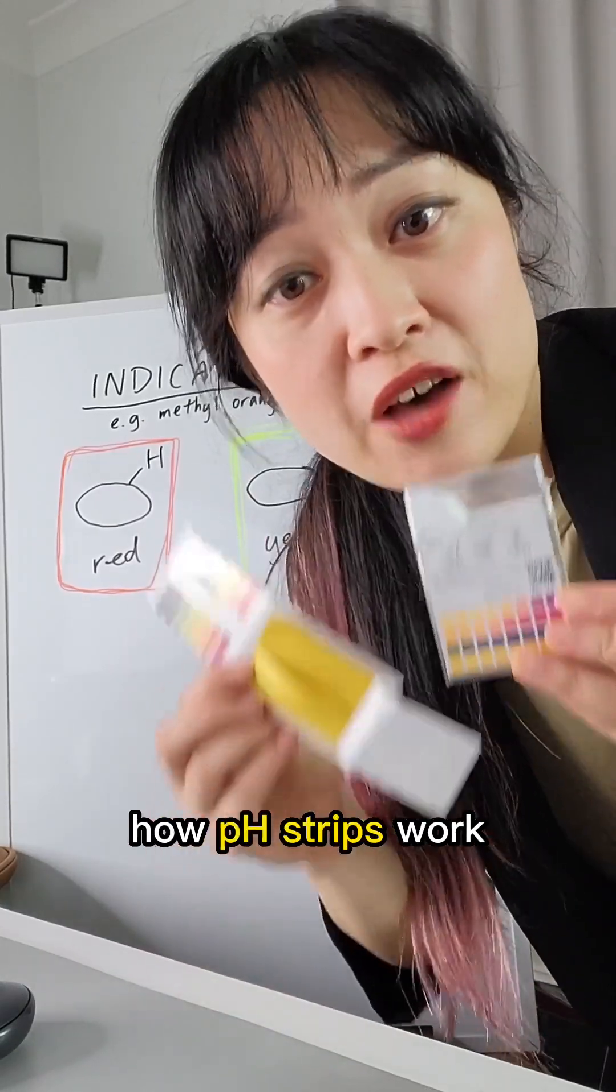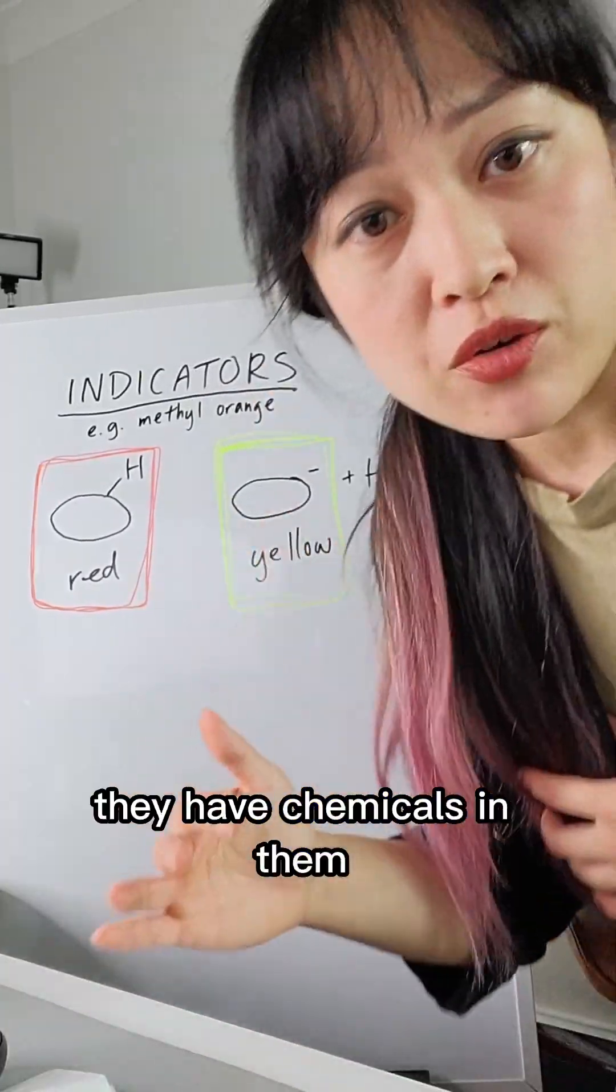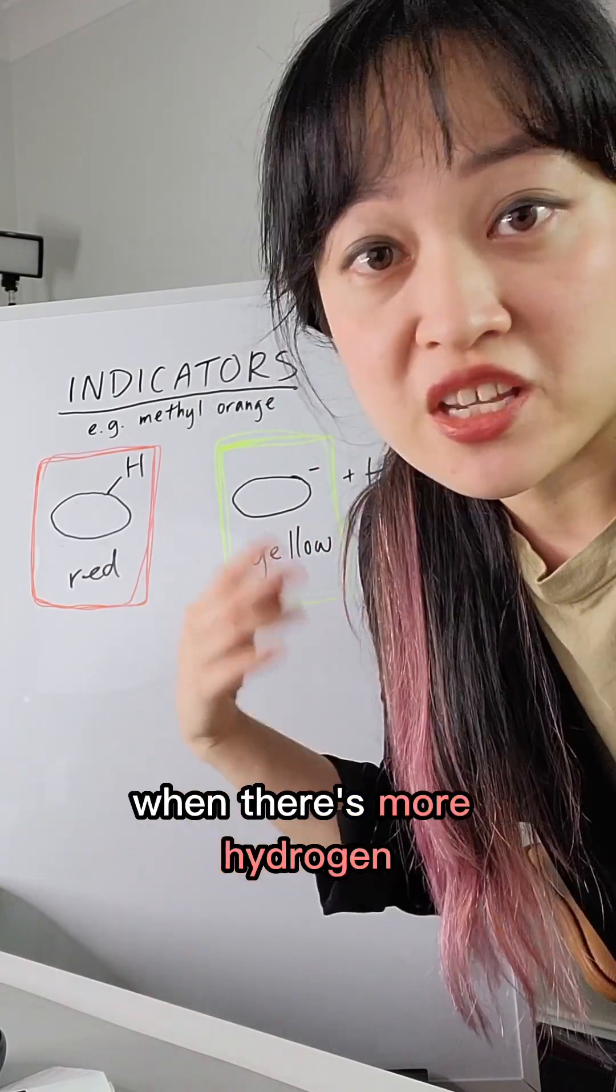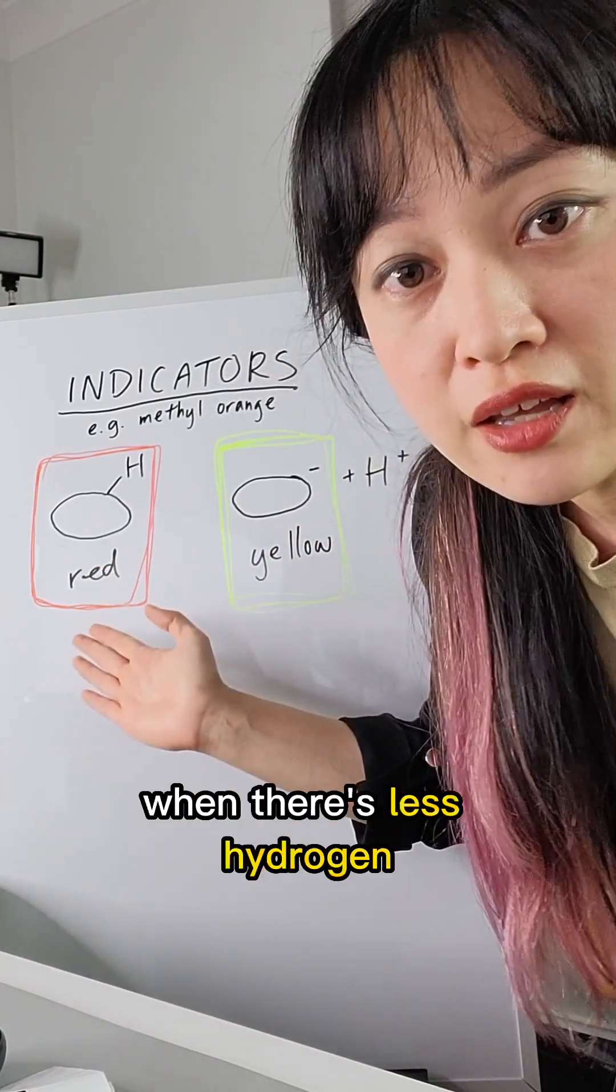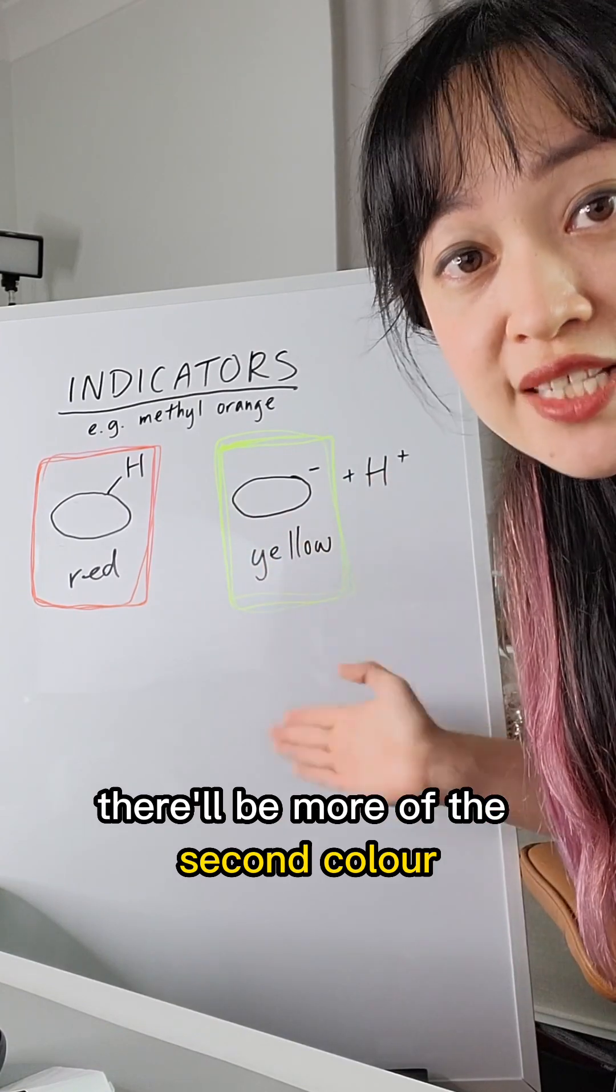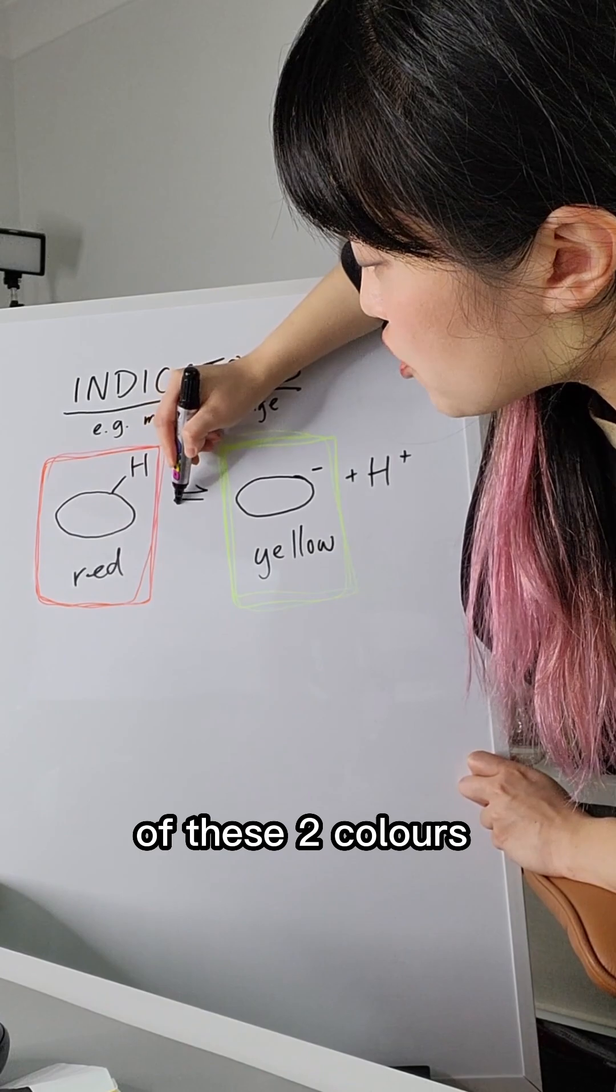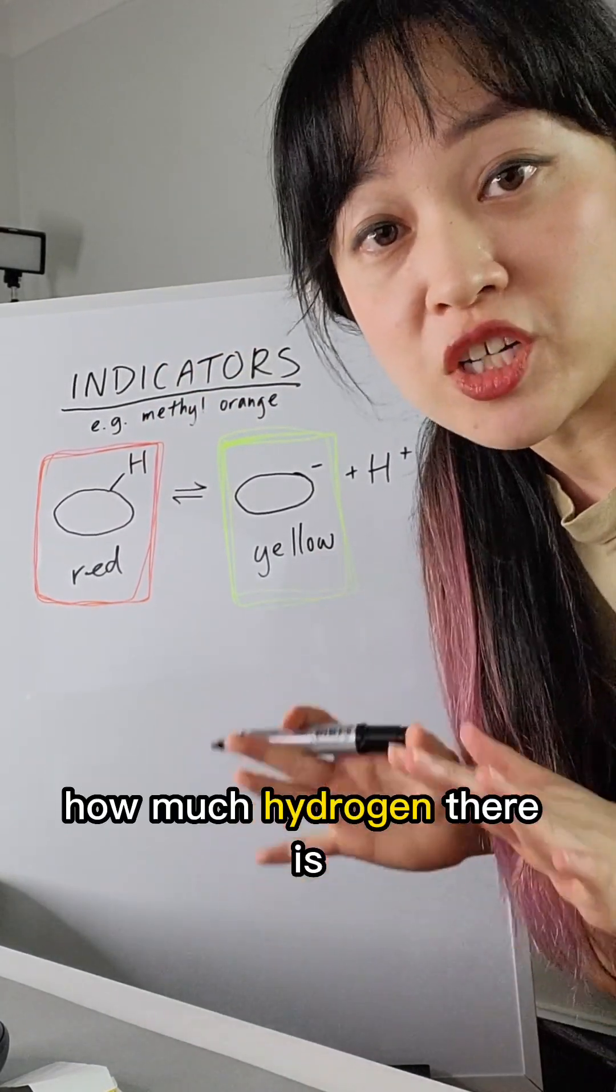Okay, we need to talk about how pH strips work. They have chemicals in them called indicators. Every indicator can be two different colors. When there's more hydrogen, they'll be more of the first color. When there's less hydrogen, they'll be more of the second color. So the balance or equilibrium of these two colors indicates how much hydrogen there is, which converts to pH.